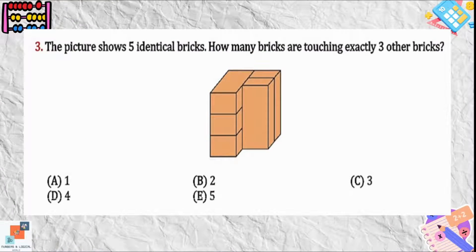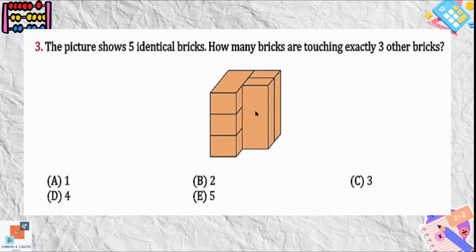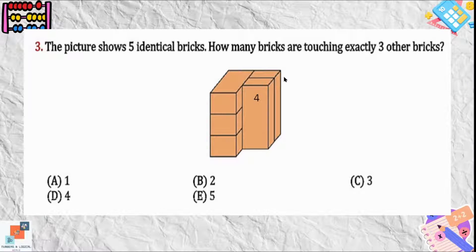Question number three: the picture shows five identical bricks — how many bricks are touching exactly three other bricks? If we look at the brick at the front, it is touching a pile of three bricks and one brick is at the back of it, so it is touching four bricks exactly.